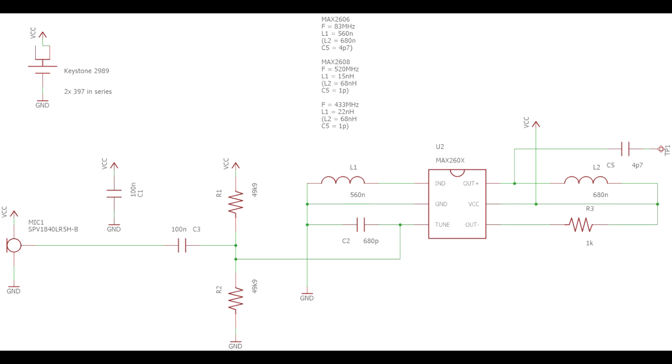Here we can see the circuit with the microphone to the left. The audio signal then goes directly to the VCO input of the IC. For this build I use the Max2606. The frequency is determined by the inductor L1.